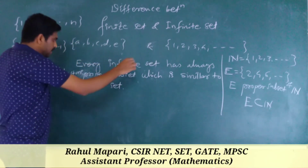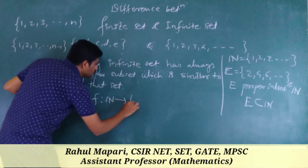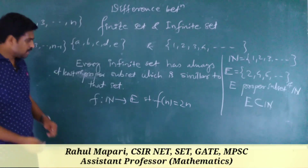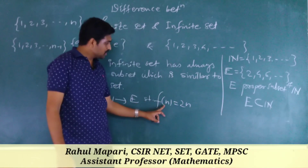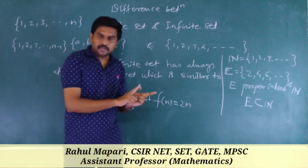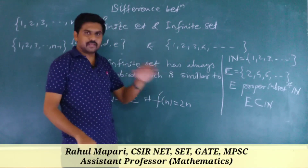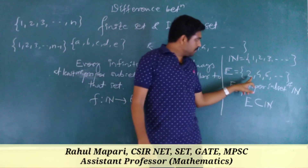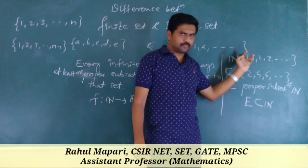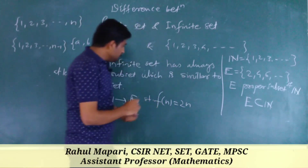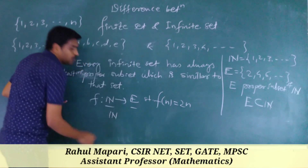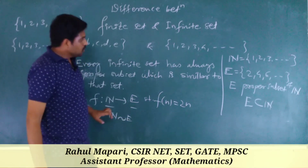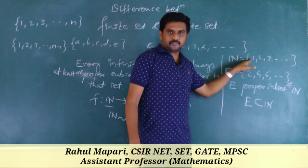We define a mapping f from the set of natural numbers to E such that f(n) = 2n. The image of 1 is 2, image of 2 is 4, image of 3 is 6, and so on. Distinct elements have distinct images, so f is one-to-one. Also, every element of E has a pre-image in N, so f is onto. Since f is both one-to-one and onto, N and E are equipotent, or similar.